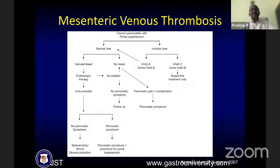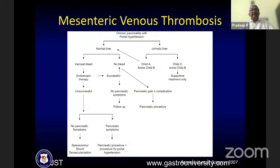The algorithm Professor Ramesh has advocated: when there is a normal liver with variceal bleed — endotherapy. If there is no bleed but pancreatic pain — pancreatic procedure is advocated. Surgery becomes more technically challenging because of dilated collaterals — a meticulous approach or a prophylactic shunt followed by surgery at a later date.